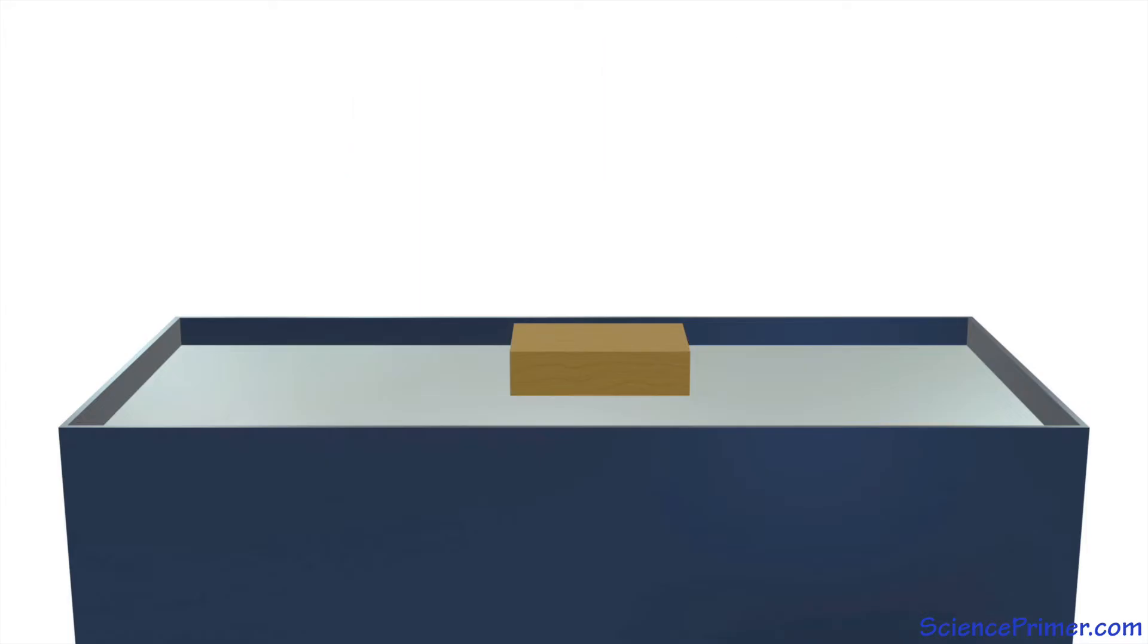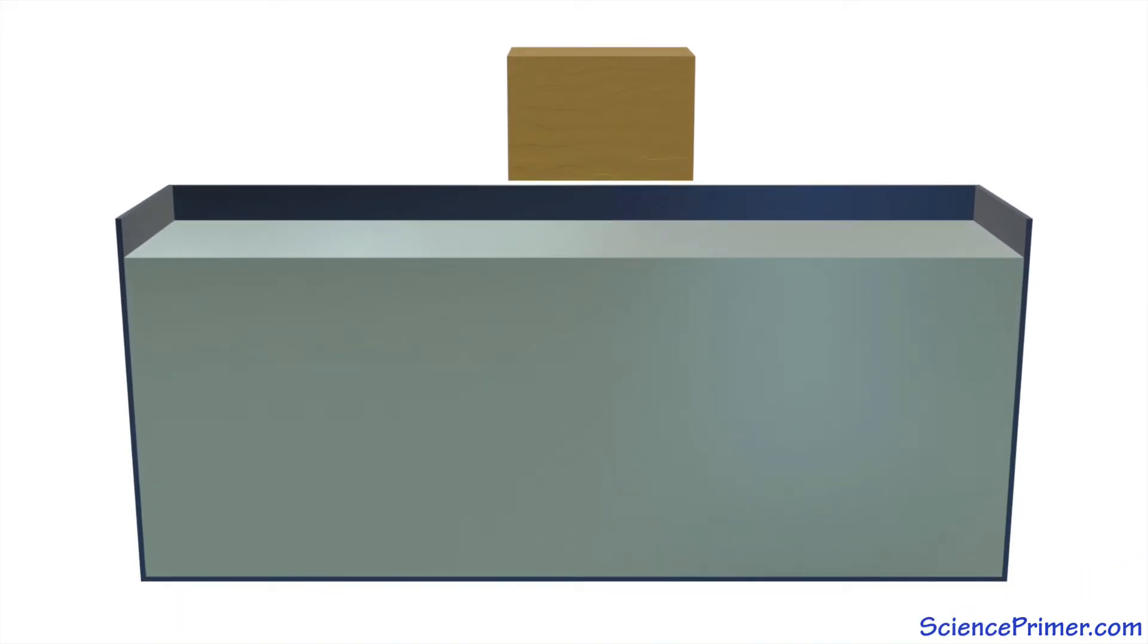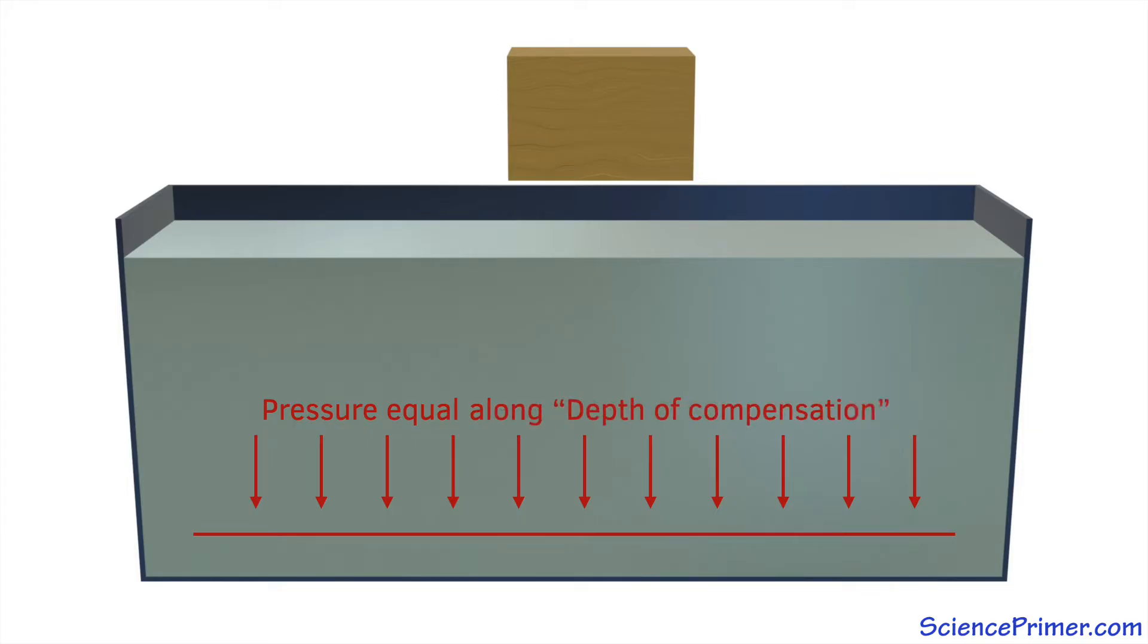To understand how buoyancy relates to plate tectonics and the behavior of the earth's crust, it helps to think about it from the perspective of the surrounding water. In a container with nothing but water, pressure is equal everywhere along a line near the bottom. Using the terminology from isostasy and plate tectonics, we can call a depth where pressure is equal the depth of compensation.